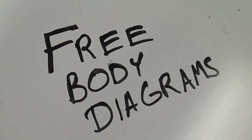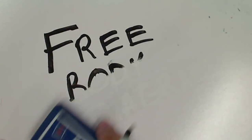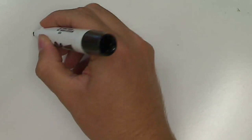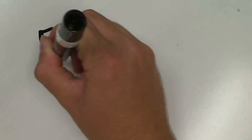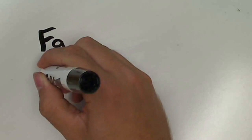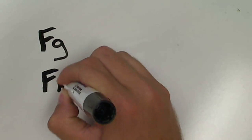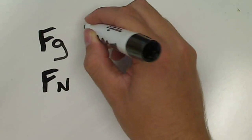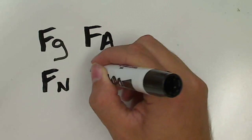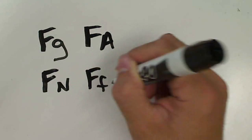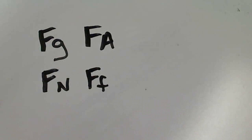Hello physics students. Let's take some quick practice at drawing some free body diagrams. So first of all, we need to look at the forces that we have involved. We could have the force of gravity, the force normal, force applied, and force friction. These are our four most common forces — they come up in tons of different examples.